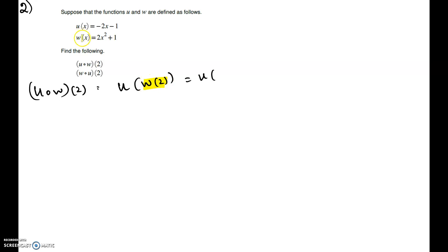w at 2, you have to go to the w function and then change the x there with the 2. So, it's going to be 2 times 2 squared plus 1. That is inside. Keep the outside one as is, u. Then it is 4 times 2, 8 plus 1. So, u at 9.